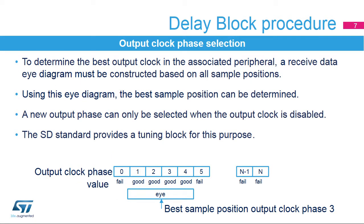To determine the eye diagram, all peripheral interface data must be received and verified for all selectable output clock phases. From this, a pattern with good and failing output clock phases will be obtained, and subsequently the best phase among the good ones is selected. To select a new output clock phase, first set the SEN bit to 1 to disable the output clock. Once the output clock phase is selected via bits SEL 3 to 0, the output clock can be re-enabled by resetting the SEN bit to 0.